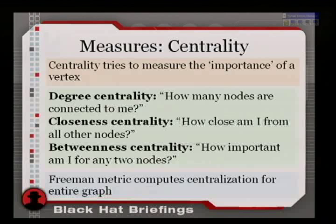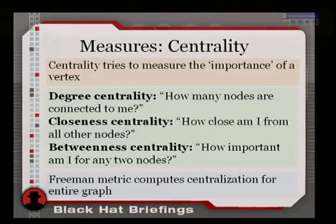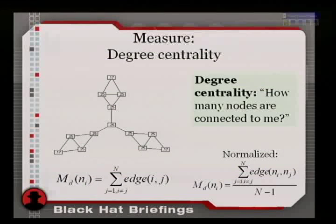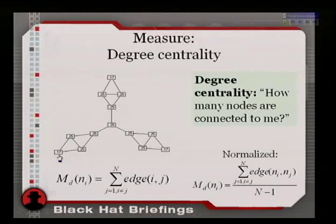I'll give you a couple of examples of measures you can put on graphs. One is centrality, which means importance. I'll give you three centralities — there are more. Degree centrality: how many nodes are connected to me, counting immediate neighbors. In the star graph here, everyone has a normalized score of 0.25, except the one on the outer edge which has 0.17 because it has only two neighbors.